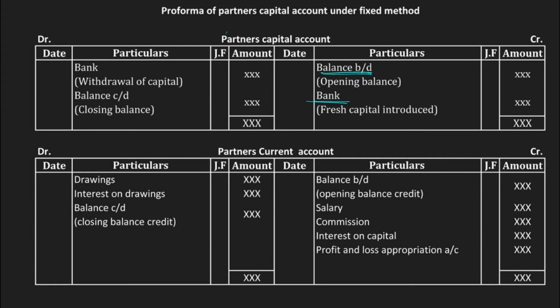If it is the first year, you enter fresh capital introduced — written as 'bank' on the credit side. The debit side 'bank' entry is for cash withdrawn from the capital. So we'll be entering only three entries: bank on the credit side for capital introduced, bank on the debit side for capital withdrawn, and finally the closing balance — balance carried down — which appears on the debit side.